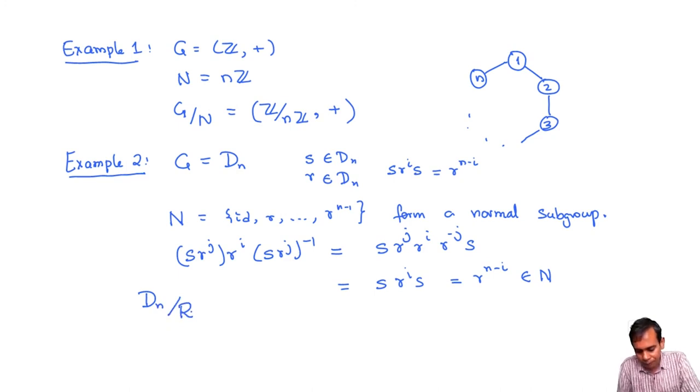Then we can ask what is the quotient DN mod N. It's going to be a group whose order is the order of DN divided by the order of N which is just 2. This is a group of order 2 and the only possible group of order 2 is Z mod 2. So you can get Z mod 2 as a quotient of the dihedral group by its normal subgroup of rotations.